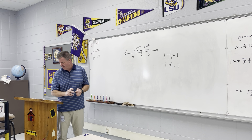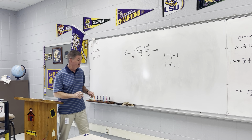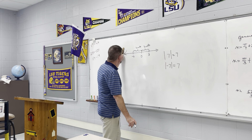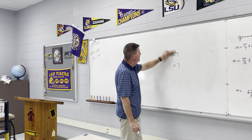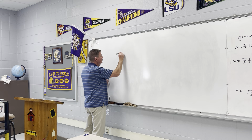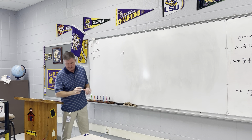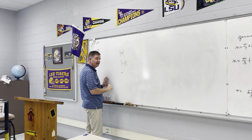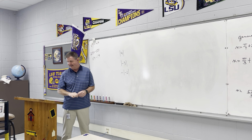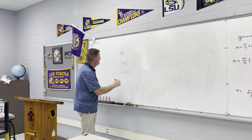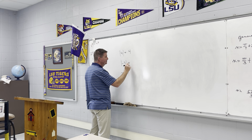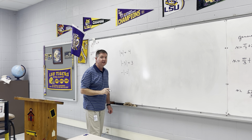In example number 1, they want us to write the expression without using absolute values — write what it's equal to. We have the absolute value of 4, the absolute value of negative 3, and then a negative on the outside of the absolute value of negative 2. The absolute value of 4 is 4 units away from 0, so it's 4. The absolute value of negative 3 is 3 units away from 0, so it's 3.